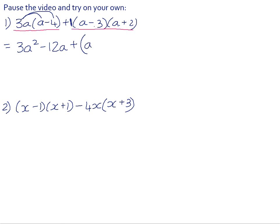So a times a is a squared. Our outers are positive 2a. Our inners are negative 3a. Positive 2a subtract 3a is negative 1a and negative 3 times positive 2 is negative 6.